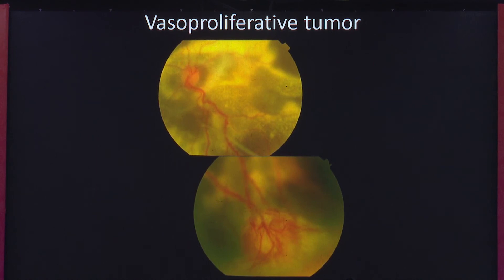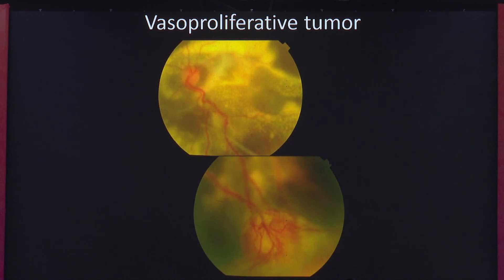Another lesion that causes extensive subretinal exudates is the vasoproliferative tumour. This is a classic vasoproliferative tumour — you can see the vessels and a yellow-orange tumour fraction in the inferior periphery. It is usually located inferiorly and associated with exudative retinal detachment and exudates.